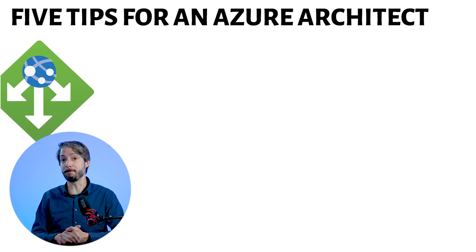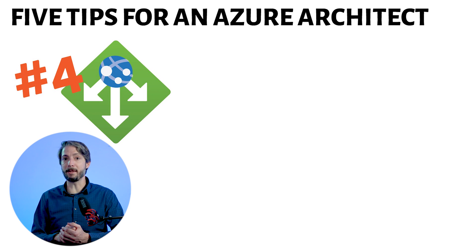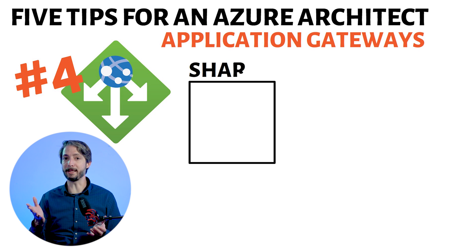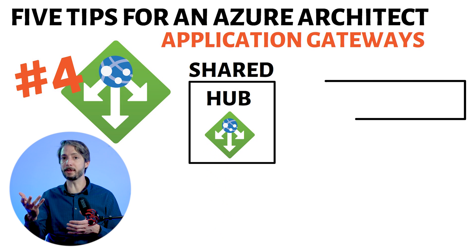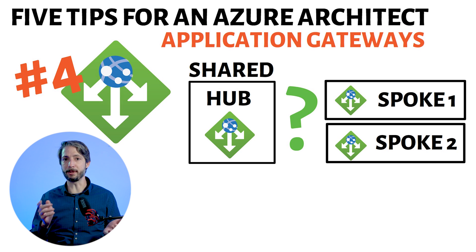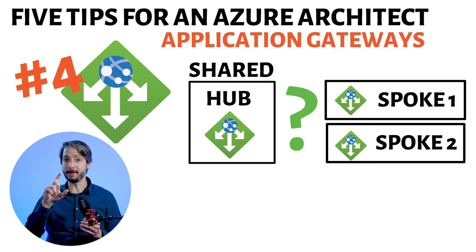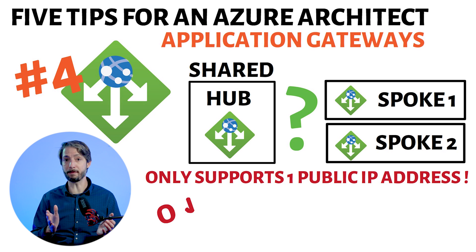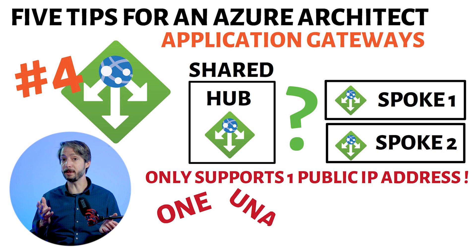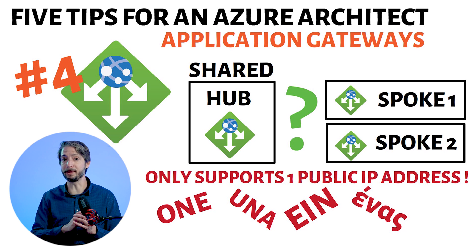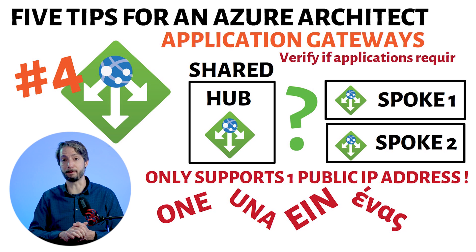This brings us to tip number four, and this is about application gateways. There is always a constant discussion about whether you should put an application gateway in a shared services hub or put it in the spoke together with the application. On a high level, there is no right or wrong answer — it all depends on your security setup and requirements. However, what you do need to know is that each application gateway only supports one public IP address. Keep this in mind if you decide to put the application gateway in the hub for shared services, as it may not be sufficient if your applications require several public IP addresses.